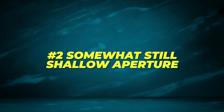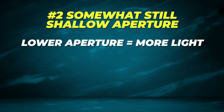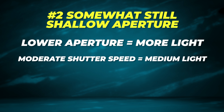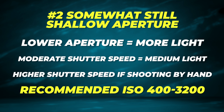Number two: shooting something that's somewhat slow where you can use a low aperture. Because we've already dialed the aperture back we're already letting in more light. But because the subject isn't perfectly still we still need a moderate shutter speed — maybe even a little higher if we're shooting by hand and not using a tripod. For this application we can increase the ISO to correct for any light we're sacrificing by raising the shutter speed. Assuming the scene is decently lit, I recommend 400 to about 3200 ISO.